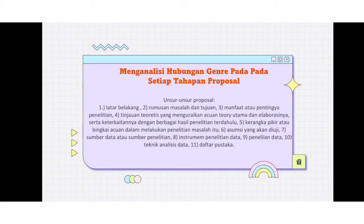Unsur-unsur proposal: satu, latar belakang; dua, rumusan masalah dan tujuan; tiga, manfaat atau pentingnya penelitian; empat, tinjauan teoretis yang menguraikan acuan teori utama dan elaborasinya serta keterkaitannya dengan berbagai hasil penelitian terdahulu; lima, kerangka pikir atau bingkai acuan dalam melakukan penelitian masalah itu.